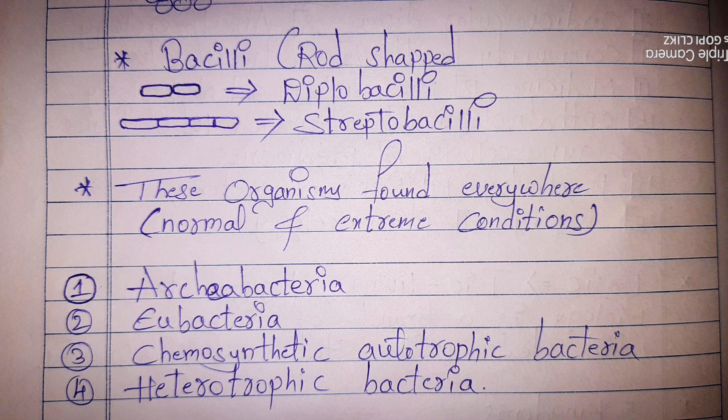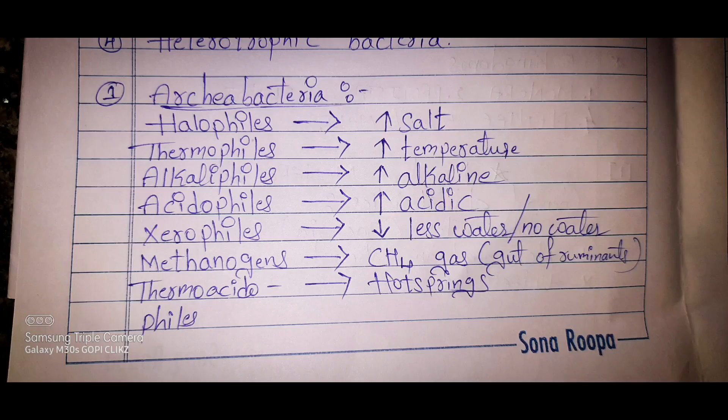There are four classes in Monera: Archaebacteria, Eubacteria, Chemosynthetic autotrophic bacteria, and Heterotrophic bacteria. Let us study about Archaebacteria first. Some bacteria live in extreme salt conditions like oceans and seas — those types of organisms are called halophiles.